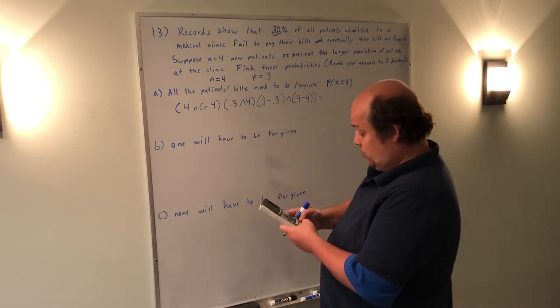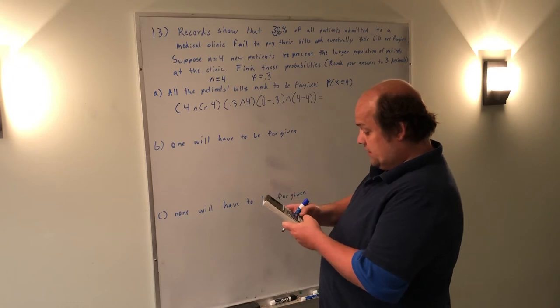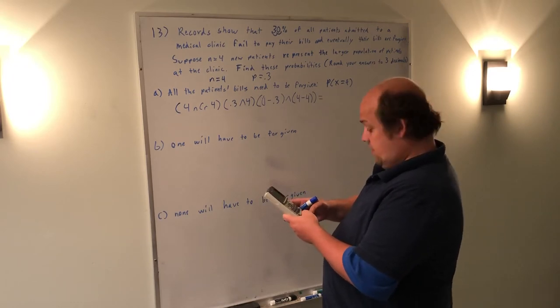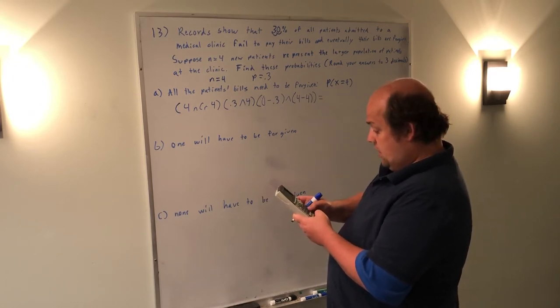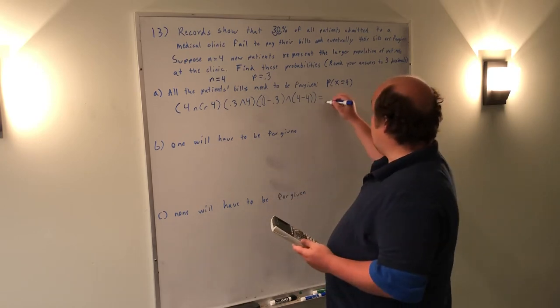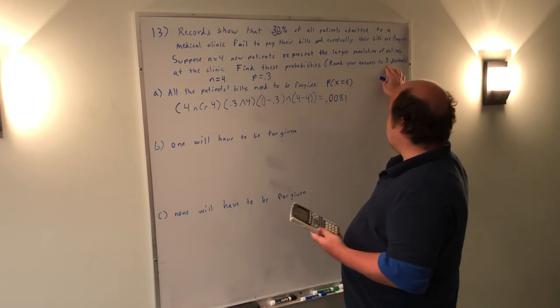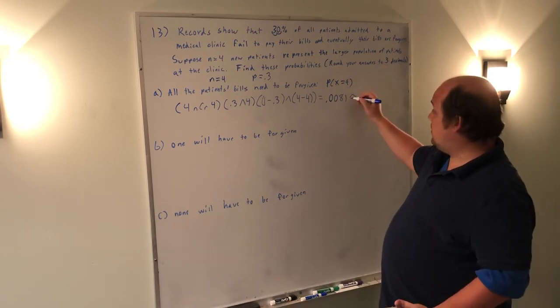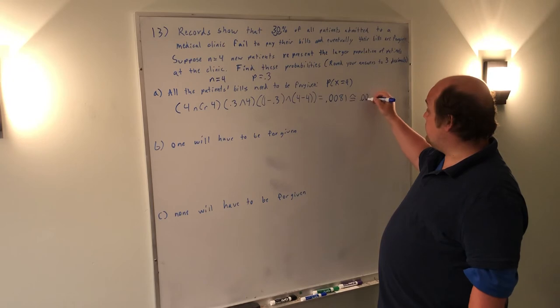New parentheses, 1 minus 0.3, close parentheses to the power of parentheses, 4 minus 4, close parentheses. Putting it all in, I get 0.0081, rounding to three decimals.